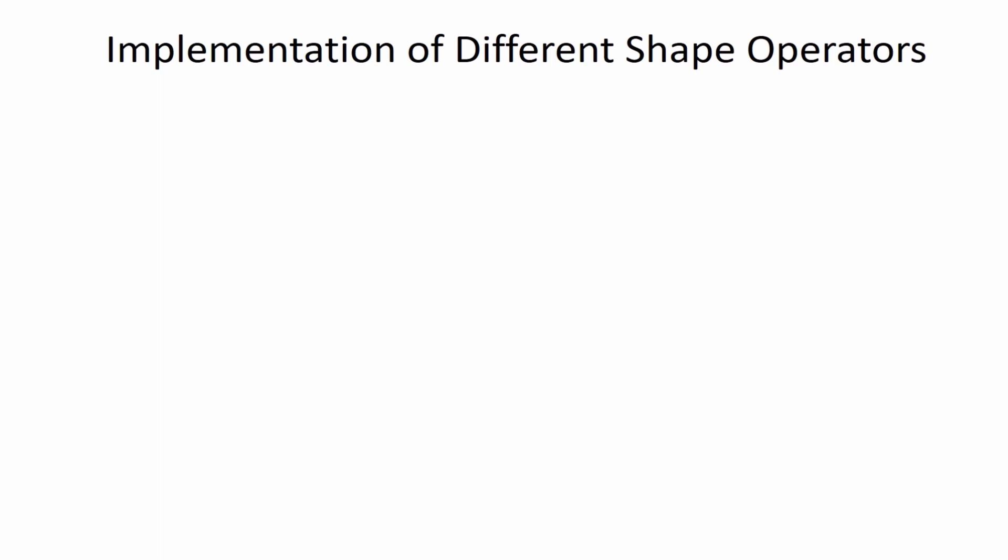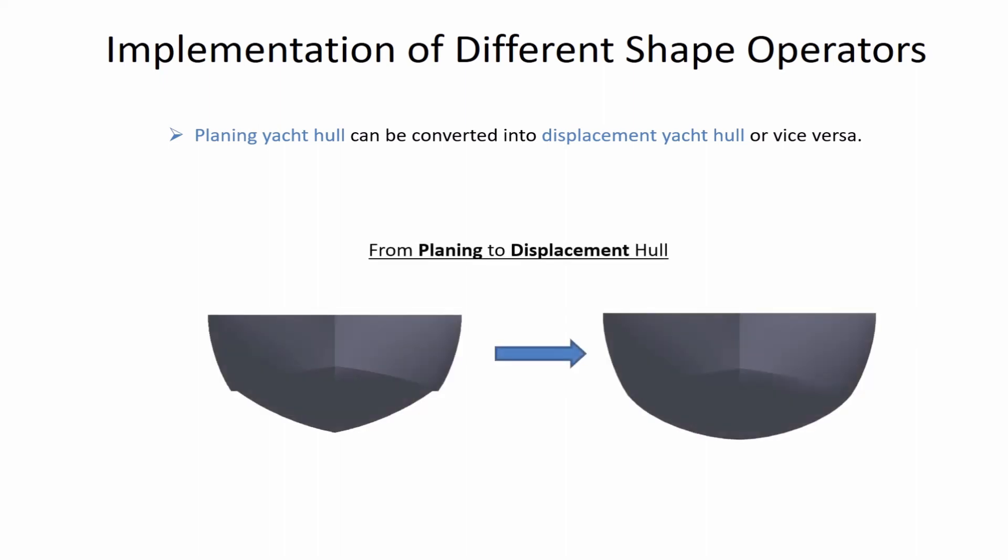The proposed design framework can transform one type of hull into a completely different one. For example, a user can transform a planing hull to a displacement hull using appropriate shape operators, such as the chine remover and minimum radius of curvature shape operators.